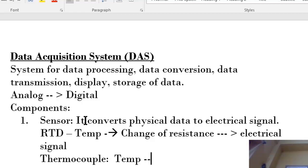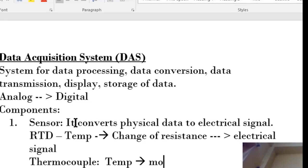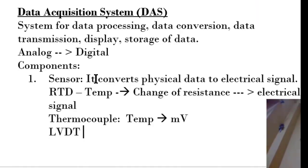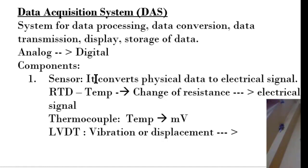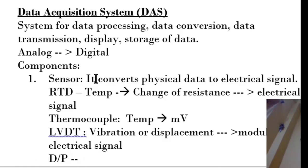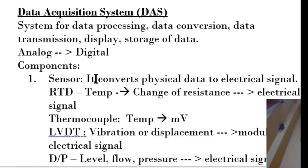A thermocouple senses temperature and gives an output in millivolts. LVDT, the linear variable differential transducer, measures vibration or displacement and gives a modulated electrical signal. A DP transmitter basically measures level, flow, or pressure and ultimately gives an electrical signal.